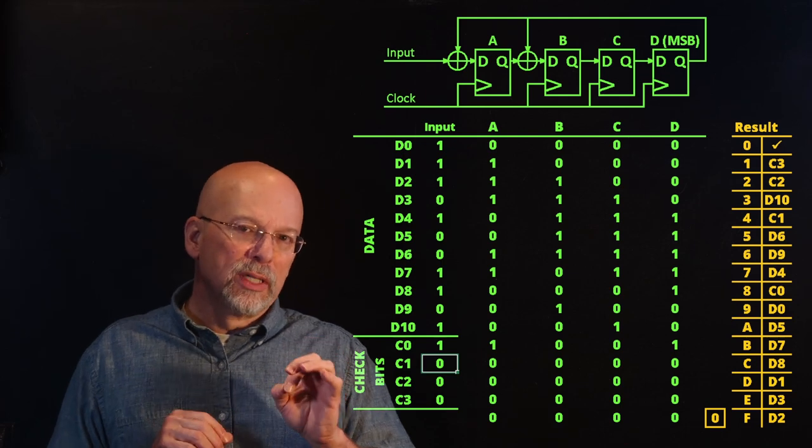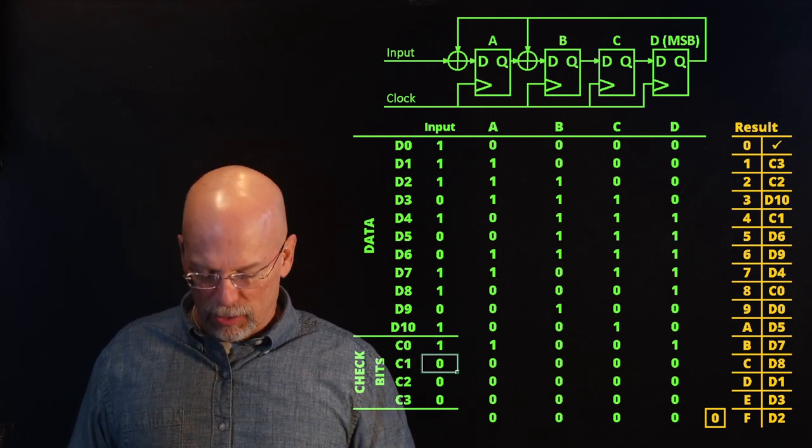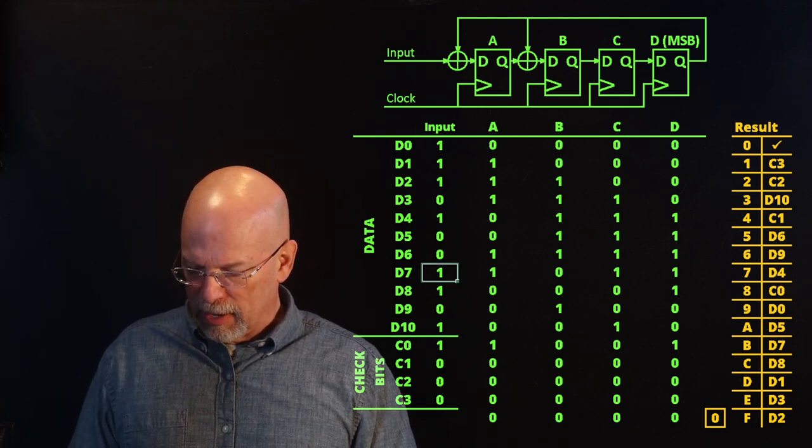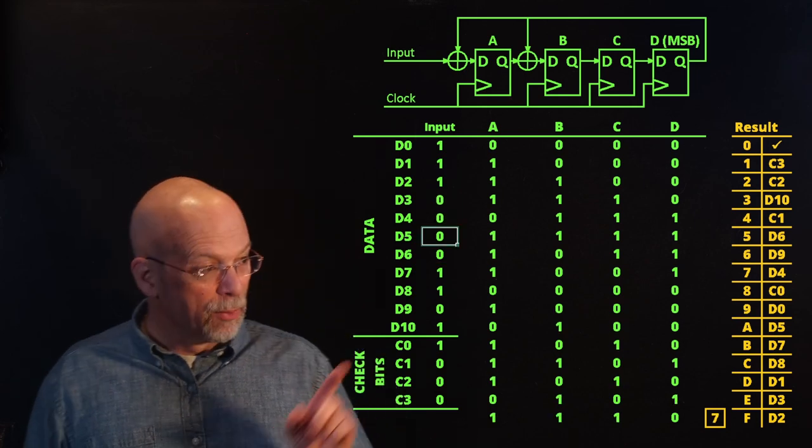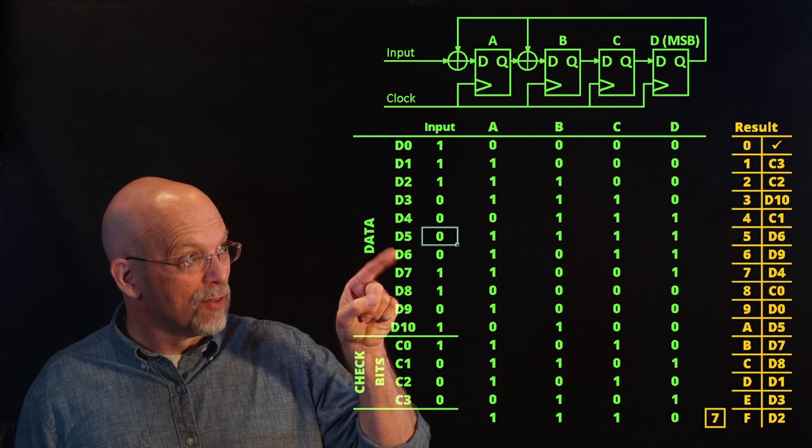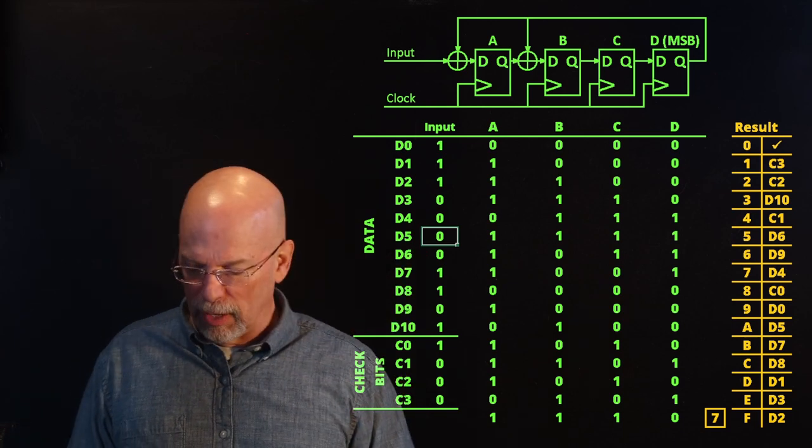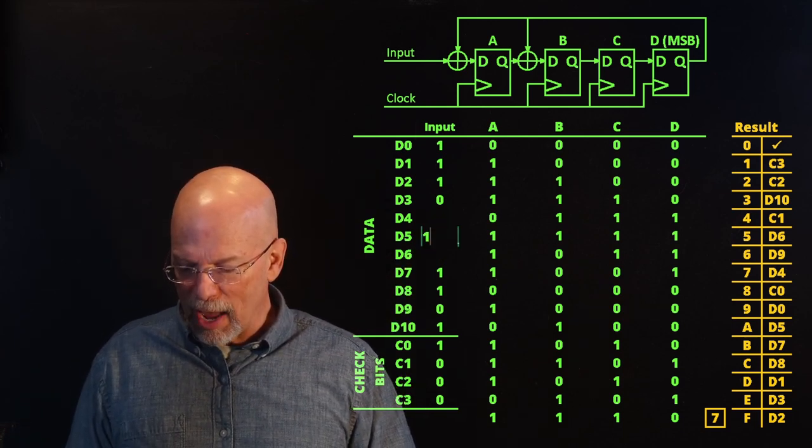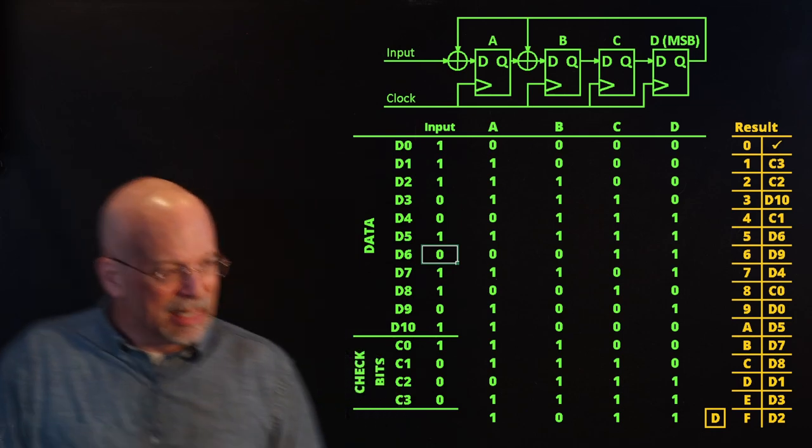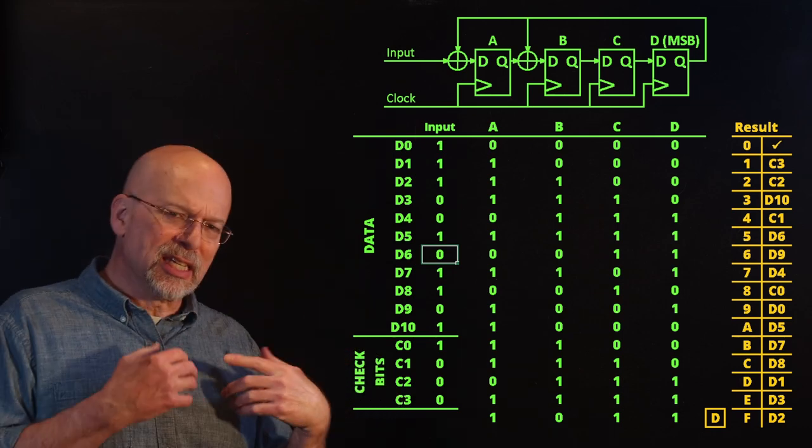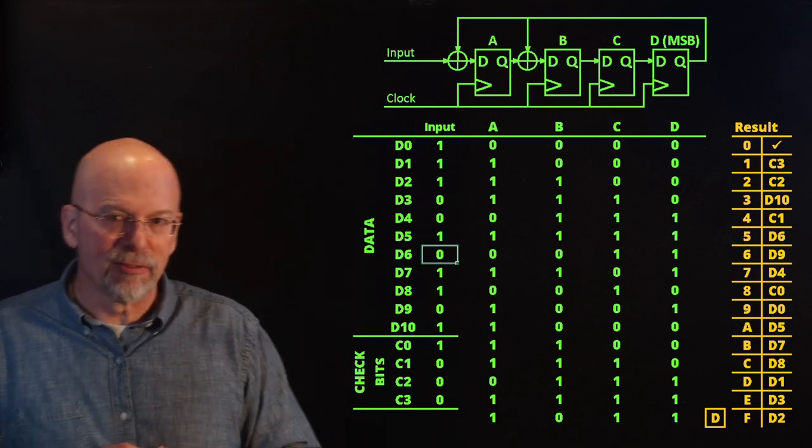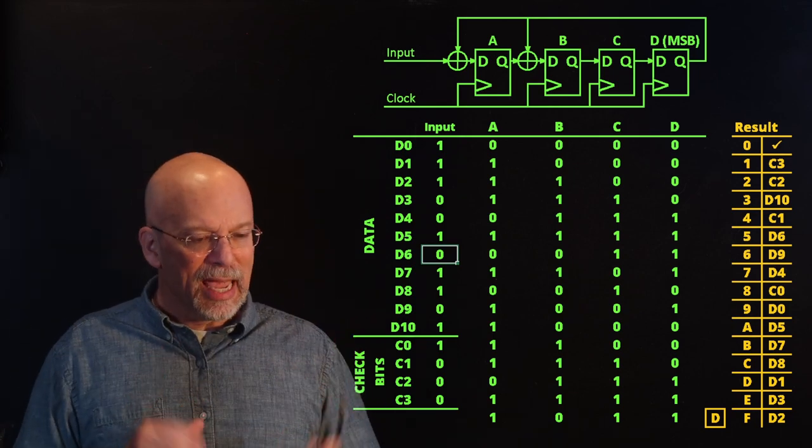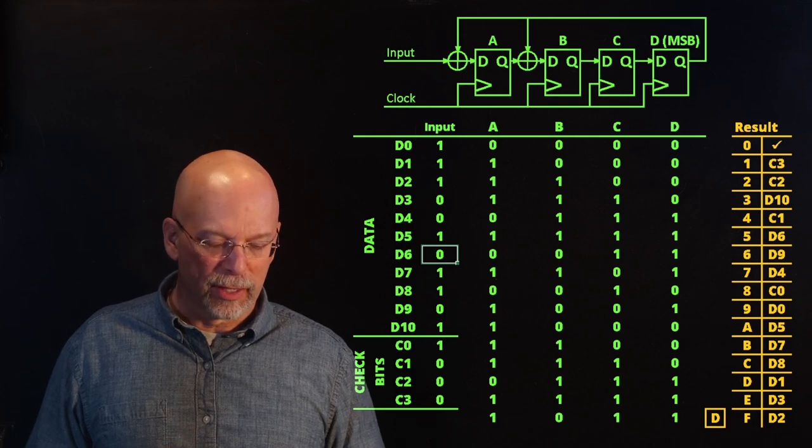Now, note that this only detects single bit errors. If I have two bits flipping, for example, let's say I make D4 a zero, and if we look down and we say it goes seven, and we go up to seven in our table that shows that D4 flipped, but if we change D5 as well, we get a D, and that D says that D1 flipped, but we know that it was actually multiple bits. We had D4 and D5 both flipping, so we can't detect double bit errors with this.